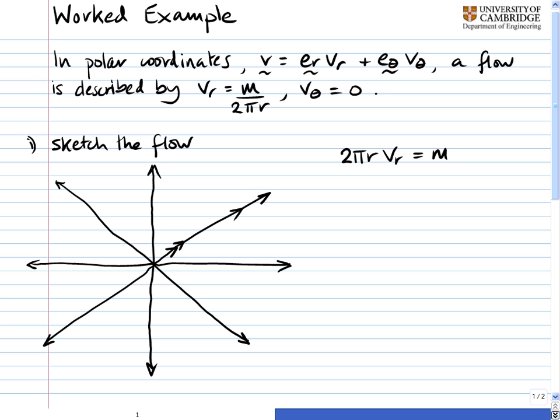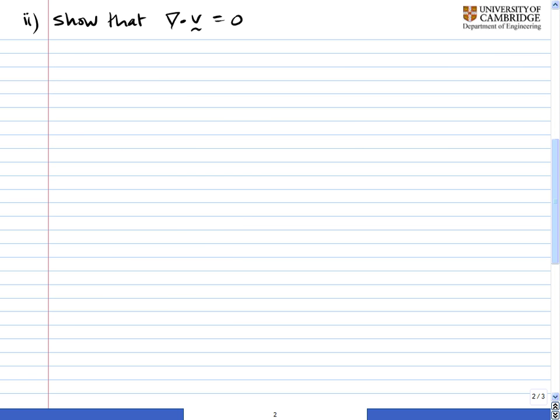And so that's telling you essentially that the volumetric flow rate at circles of radius r is a constant. Next, we're asked to show that div v is equal to 0.